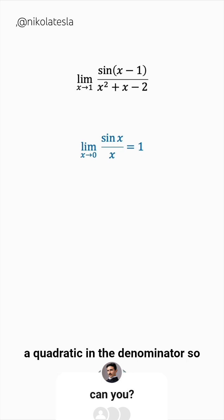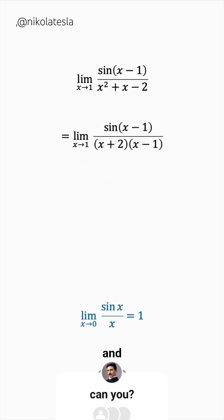We have a quadratic in the denominator, so let's try and factor it. Let's think of two integers that multiply to give negative 2 and add up to 1. These will be positive 2 and negative 1.